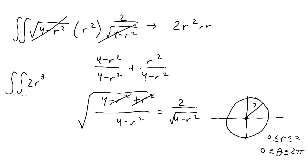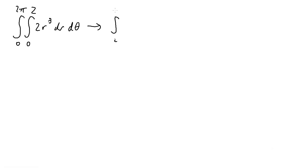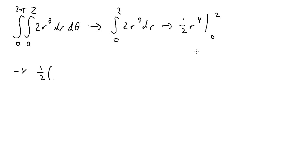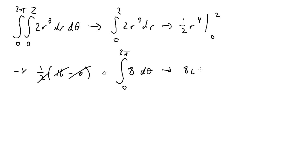Now evaluating the outer integral from 0 to 2π: the integral of 8 with respect to theta is 8θ. Evaluating from 0 to 2π gives 8 · 2π − 0 = 16π. So the final answer is 16π.